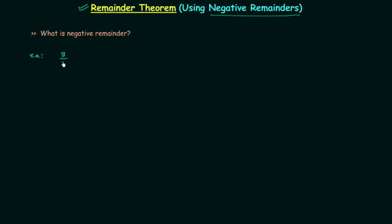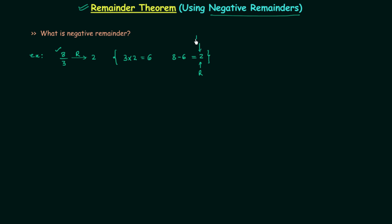Let's say we want to divide 8 by 3. The remainder of this division is equal to 2. The remainder is 2 because we multiplied 3 by an integer that gives us the result closest to and smaller than 8. 6 is closest and smaller than 8; we needed 8 for perfect division but we have 6. So 8 minus 6 equals 2 — we are short by 2, and that is the positive remainder.